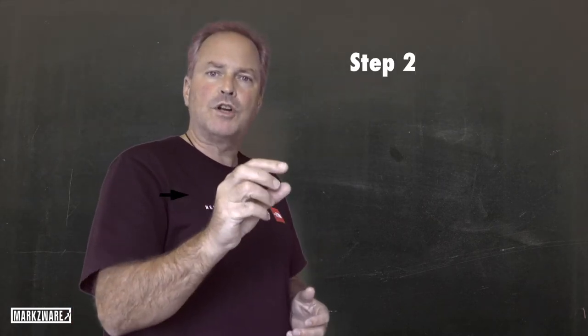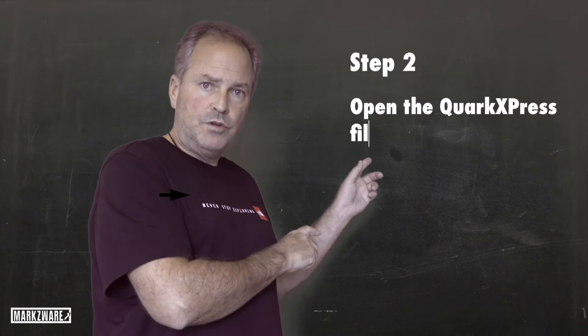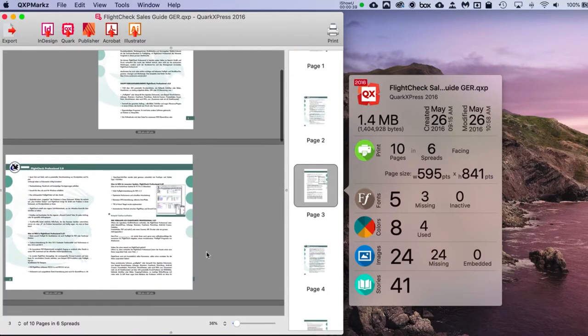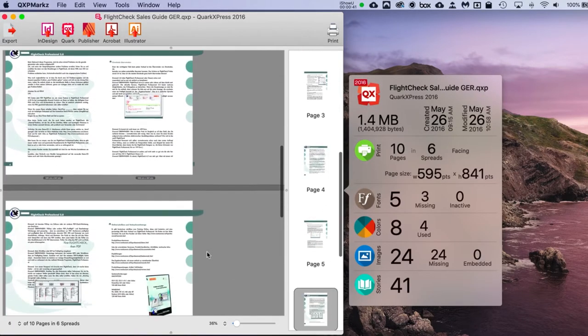Step 2. Drag and drop your QuarkXPress file onto the QXP Markz icon. You get that preview I was discussing. Look at that. Pretty neat, huh? You see what you're going to convert before clicking the buttons.